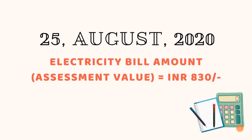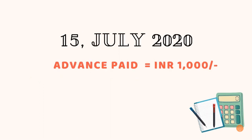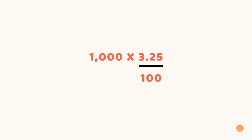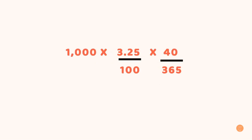For example, a consumer's electricity bill amount as per the assessed value is INR 830 as of 25th August 2020, and the said consumer had already made an advance payment of INR 1000 on 15th July 2020. This accounts for an advance held for 40 days. Interest on this advance amount is then calculated as 3.25% of INR 1000 for 40 of the 365 days in a year.